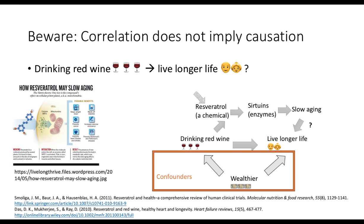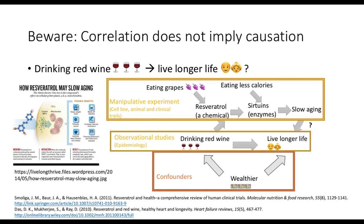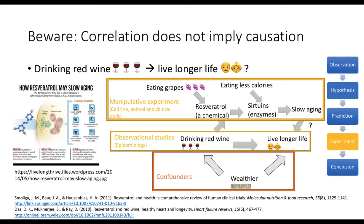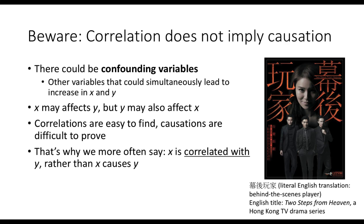Scientists have done years of experiments to prove the causal link between red wine drinking and longevity, and it is not yet certain whether red wine drinking indeed leads to longer lives. Although they did prove that red wine contains a special chemical that activates some enzymes that slow down the aging process, they are not sure if that could lead to longer lives. The observation that red wine drinking is correlated to longer lifespan is known as an observational study, whereas manipulative experiments are also counted. Science needs both to progress. The takeaway is that correlation does not imply causation — you should always be aware of confounding variables, or behind-the-scenes players. Correlations are easy to find, but causation is difficult to prove. This is why we often see 'x is correlated with y' rather than 'x causes y'.